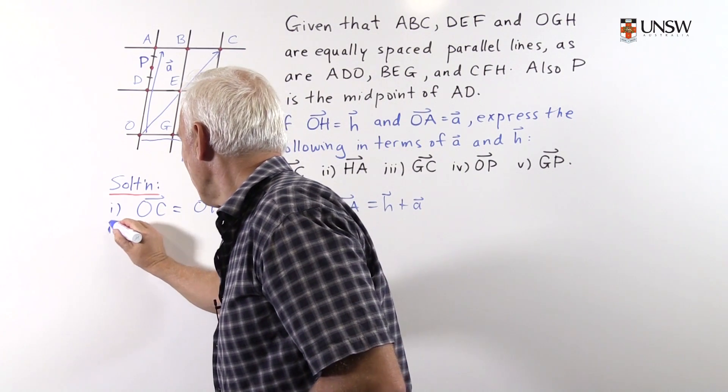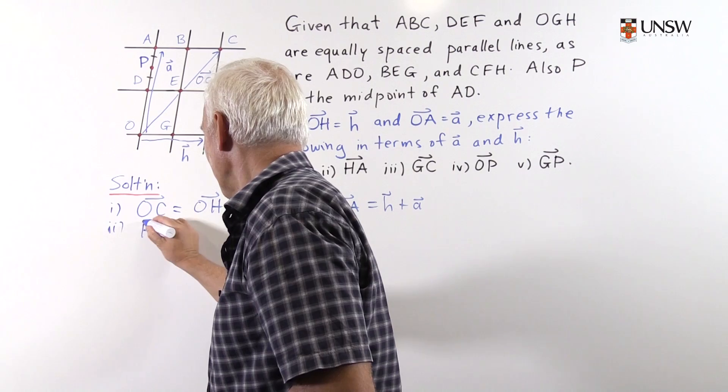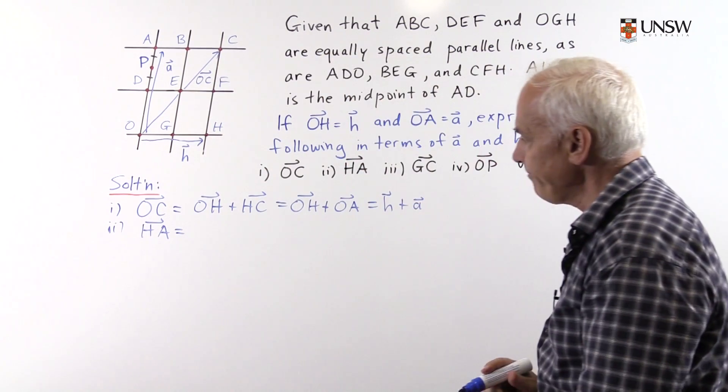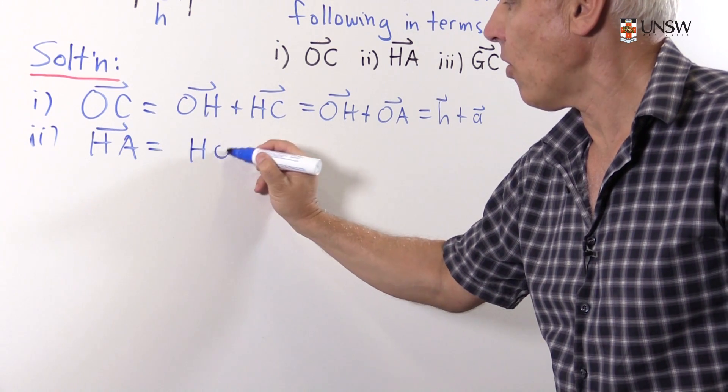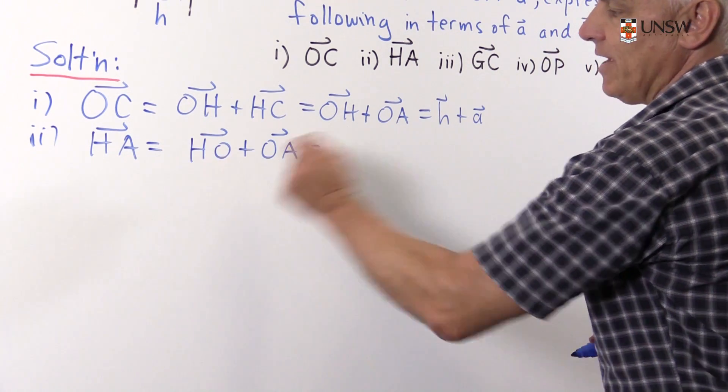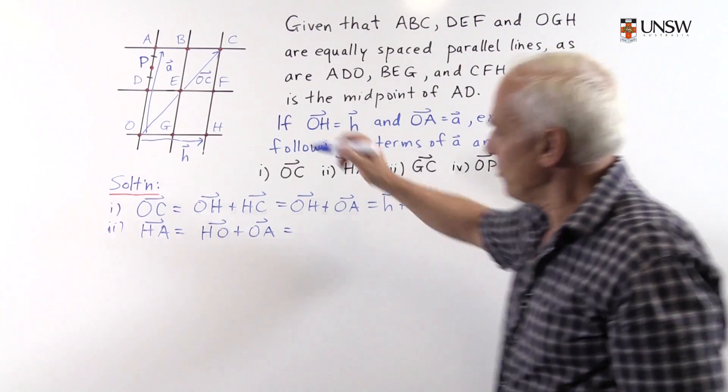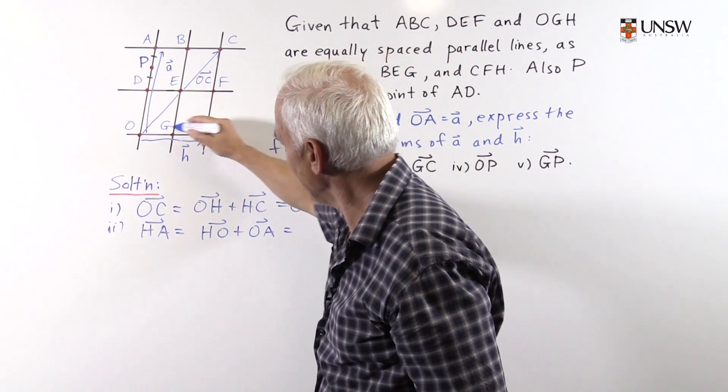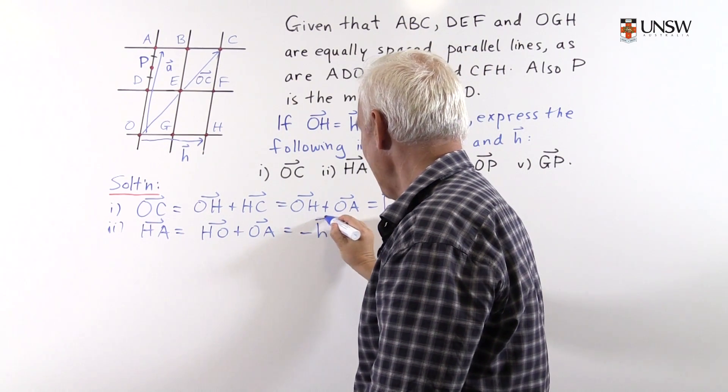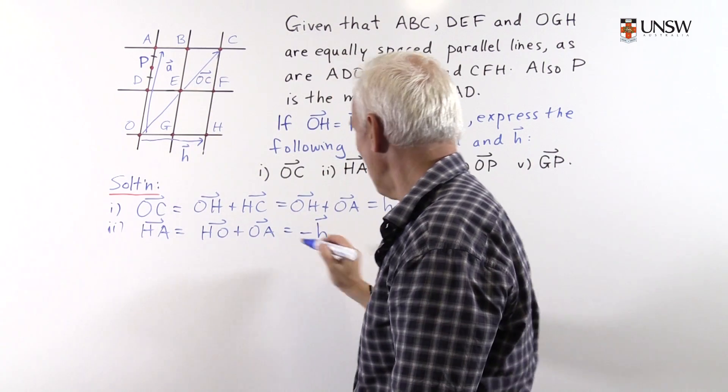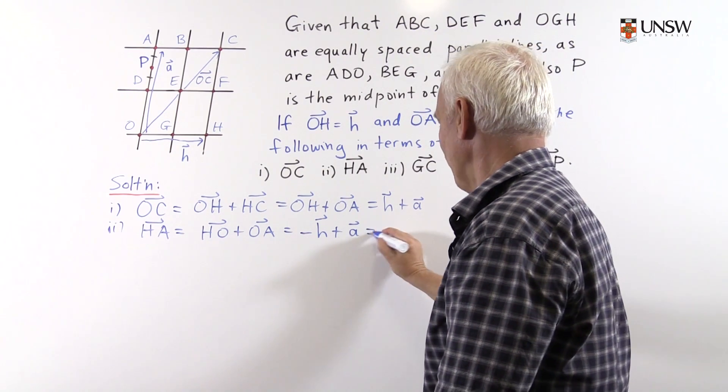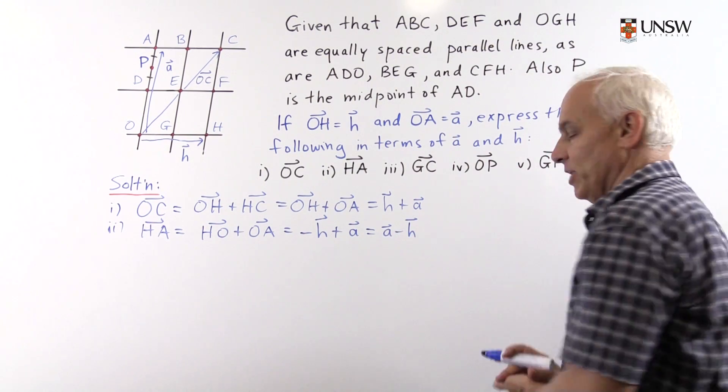How about the vector HA? Where is that on the diagram? It's the vector from here to here. So I'm going to write that as the vector HO plus OA. We're going from H to A, so we can go via O and then to A. And the vector HO is in the same segment as the vector OH, but it's in the opposite direction. So this is minus H. And the vector OA is the vector we're calling A. So there we've expressed HA as, in fact, we can also write it as A minus H. The difference between A and H.